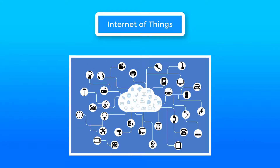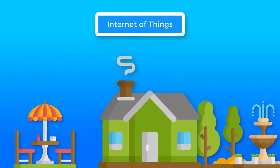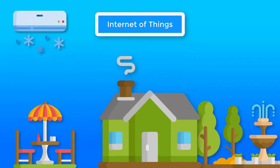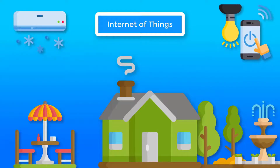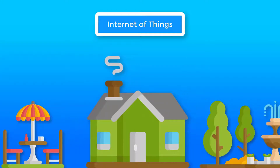Let's explore some examples. First, Smart Homes. Do you want to turn on your air conditioning before you walk in the door of your home? Or do you want someone to switch off lights if you forget? Or do you want to perform any other task in your home with just a snap of your finger? With smart homes, you can do all these things using IoT.